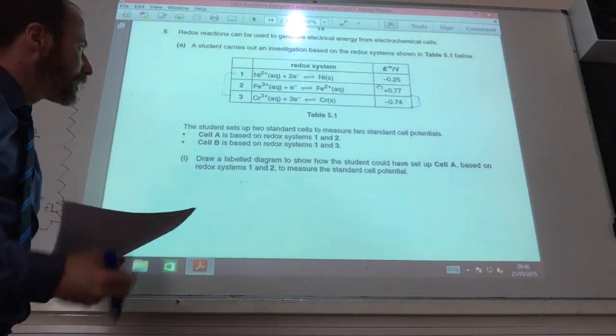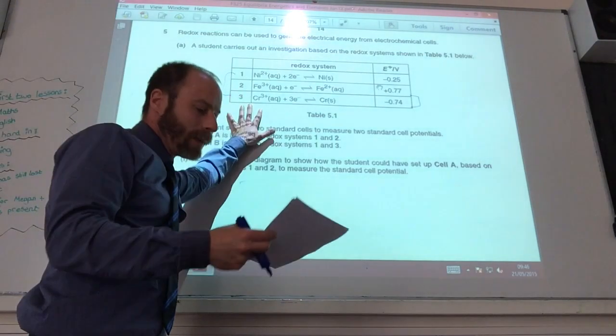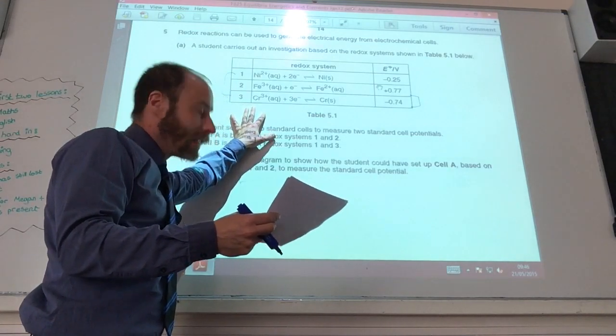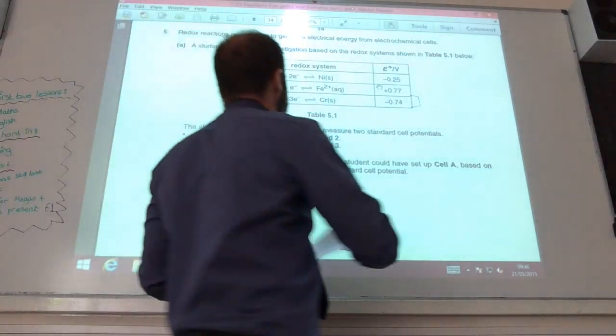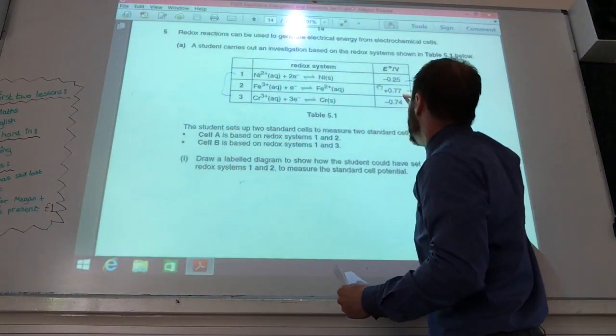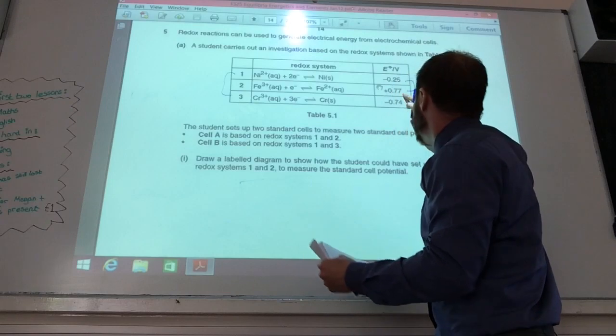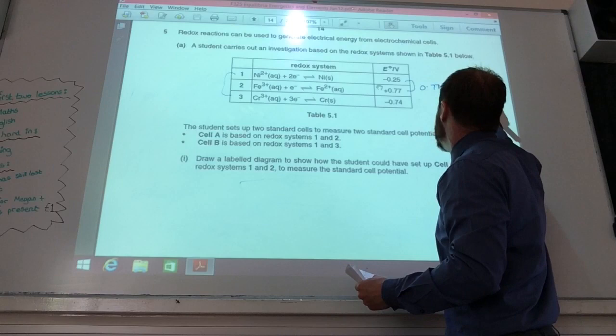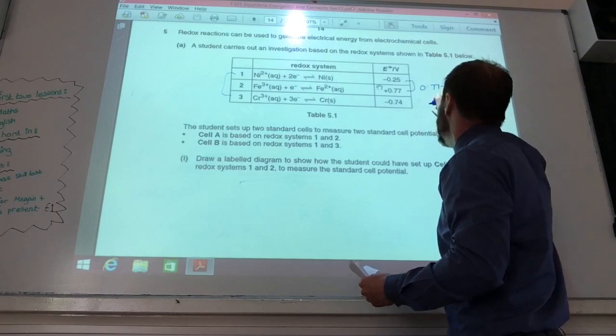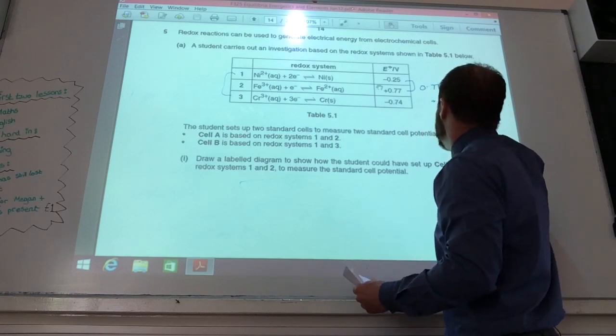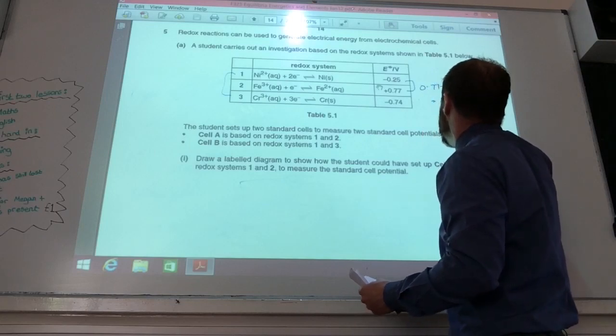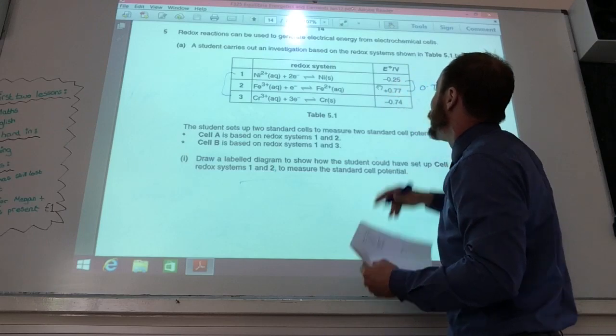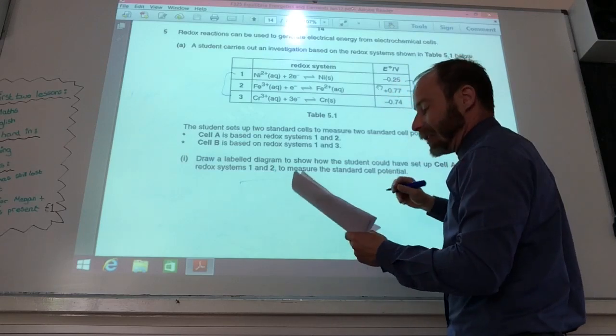Alright, so the next question is quite useful to have this table up. It asks me, cell A, what is going to be the standard cell potential? So it's based on systems 1 and 2, so it's going to be the difference between those two. So 0.77 minus, minus 0.25, that gives me a difference of 1.02 volts. Which one is going to be the negative electrode? It's going to be nickel because that's got the most negative standard electrode potential.